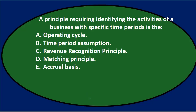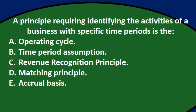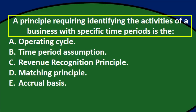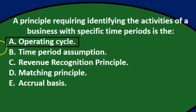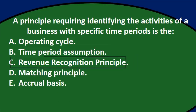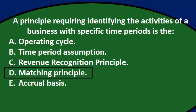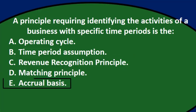Hello, in this presentation we will take a look at multiple choice questions having to do with the adjusting process. First question: a principle requiring identifying the activities of a business with specific time periods is A, operating cycle; B, time period assumption; C, revenue recognition principle; D, matching principle; E, accrual principle.